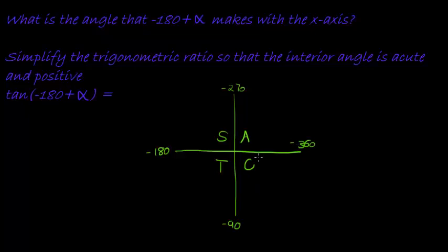Okay, so if we've numbered it, go in the clockwise direction, so that negative 180 would be... negative 180 plus means I'm going in the anticlockwise direction again. So that means I'm in the third quadrant.